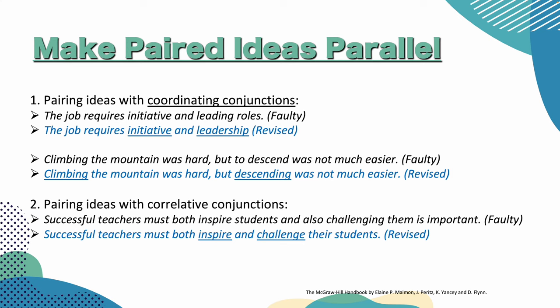Pairing ideas with correlative conjunctions. We have the example: successful teachers must both inspire students and also challenging them is important. This is very faulty. Look at the revised version: successful teachers must both inspire — that's a verb — and challenge, another verb, their students. It's much better that way, right? Rather than 'challenging.' So we started with a present tense verb, and then 'challenging' is an -ing verb. Now let's make it consistent.